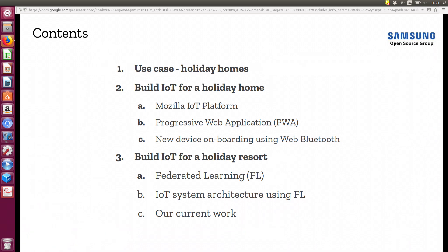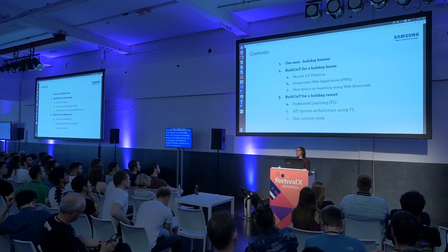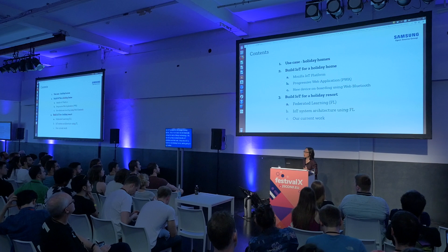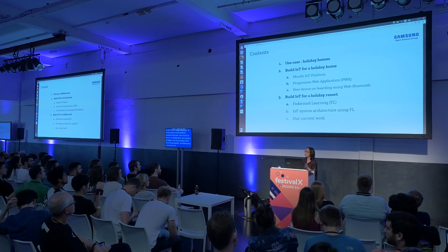Our first step is how to build an IoT system for one single holiday home. We're mainly using web of things technology, so we're going to touch the Mozilla IoT platform, progressive web applications, and the Web Bluetooth API. Once IoT is built for one holiday home, we're going to go further and see how we can connect all these homes together, and furthermore, can we introduce some intelligence when connecting holiday homes together to build IoT for the whole holiday resort.